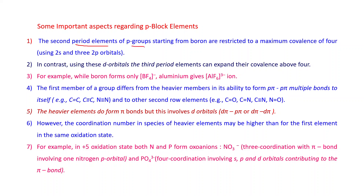Due to these features, second period P-block elements starting from boron are restricted to a maximum covalence of 4, using 2s and 2p orbitals. In contrast, third period elements can expand their covalency above 4 using d orbitals. For example, boron can form only BF₄⁻ with covalence 4, while aluminium forms AlF₆³⁻ with covalency 6.